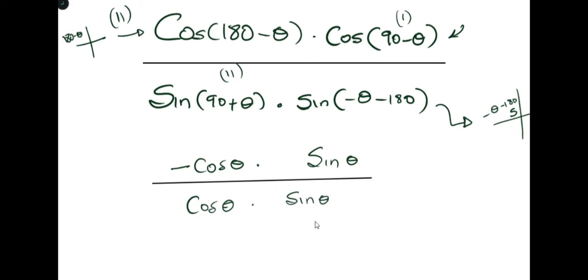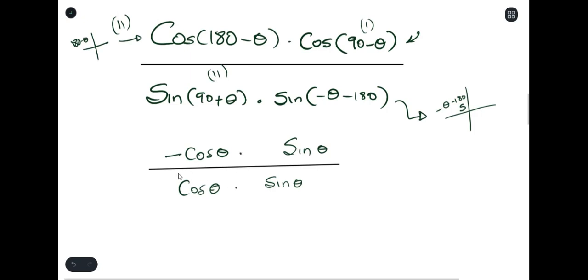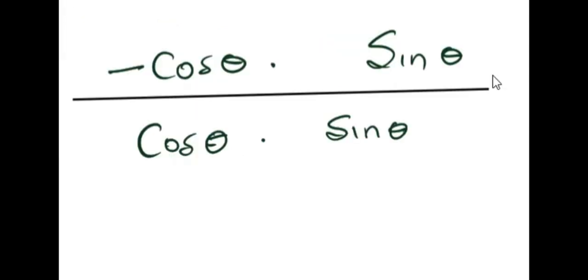So from here I notice that I could cross cancel. I have multiplication here and I have a division sign. So therefore this here can cross cancel that, and this here can cross cancel that. So from here all we are left with is just negative, and since there's no other value we just write it as negative one.